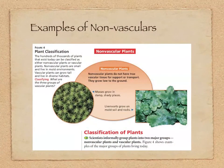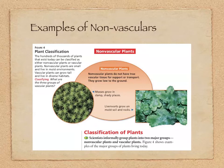Examples of non-vascular plants: of the hundreds of thousands of plants that exist today, they can be classified as either non-vascular or vascular. Non-vascular plants live in small, moist environments, and mosses and liverworts are examples of these. There's a moss on the left and a liverwort on the right. Liverworts are super cool — you've probably seen those, and mosses as well.